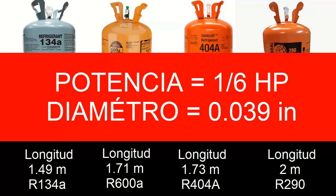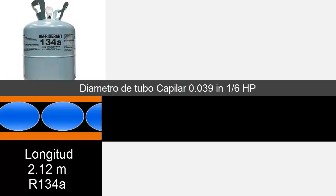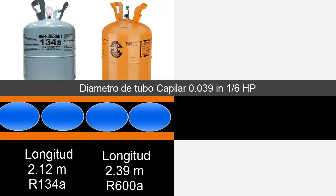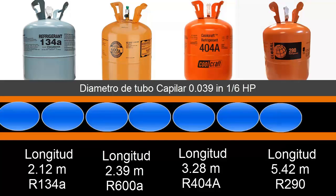Now let's move on to the electric power of a sixth horsepower. When we work with R-134A the length must be 2.12 meters, when we work with R-600A the length must be 2.39 meters, when we work with R-404A the length must be 3.28 meters, and when we get to R-290 the length must be 5.42 meters.